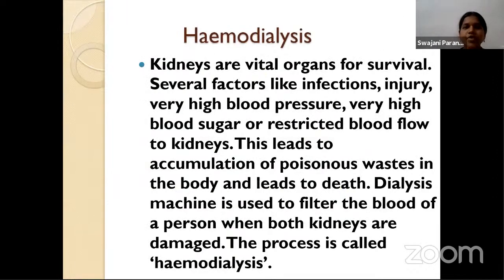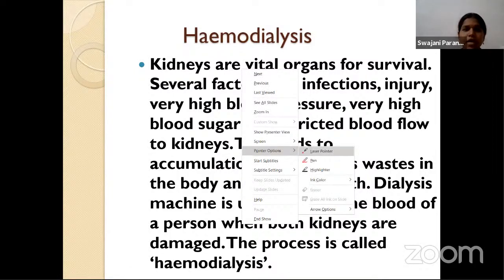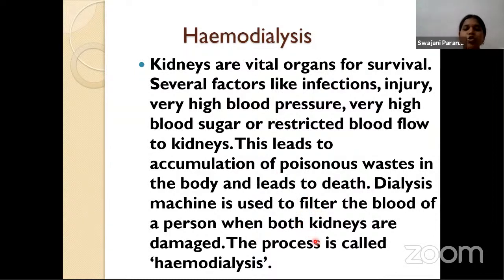On which principle does dialysis work? It is called hemodialysis — 'hemo' means blood, so blood is purified. Kidneys are vital organs for survival. Factors like infections, injury, high blood pressure, high blood sugar, or restricted blood flow to kidneys leads to accumulation of poisonous waste and death. The dialysis machine filters blood when both kidneys are damaged — this is hemodialysis. The artificial kidney is the dialysis machine.